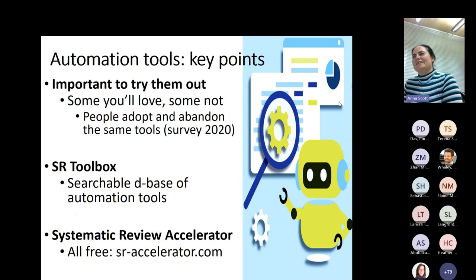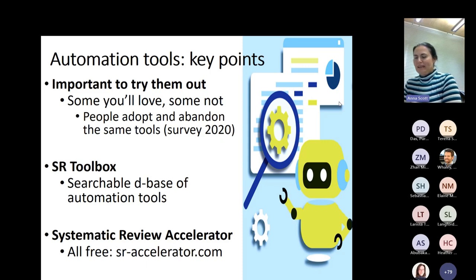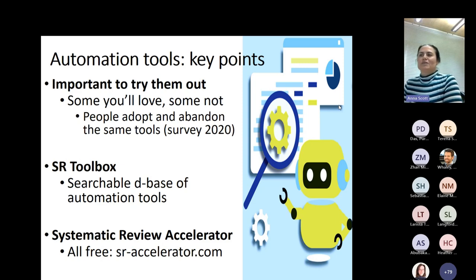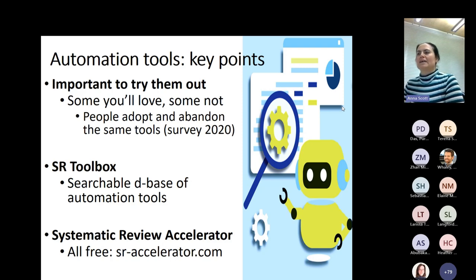Some important points on automation tools: try them out — some you'll love, some you'll hate. Back in 2020 we surveyed HTA, clinical practice guideline, and systematic review communities to ask what tools they're using, abandoning, and loving. Funnily enough, the most commonly used tools were Covidence, Rayyan, Distiller SR, and RevMan — and the exact same four were most commonly abandoned. SR Toolbox is a searchable database of automation tools for evidence synthesis, which I think is currently temporarily offline but should be coming back. The SRA is a suite of online tools available for anyone to use.